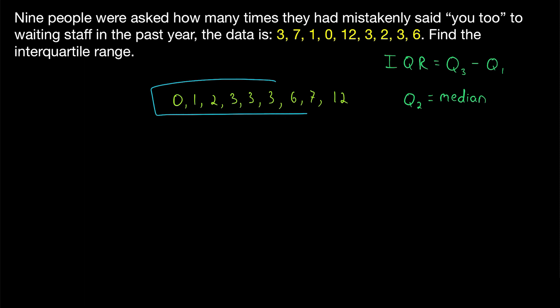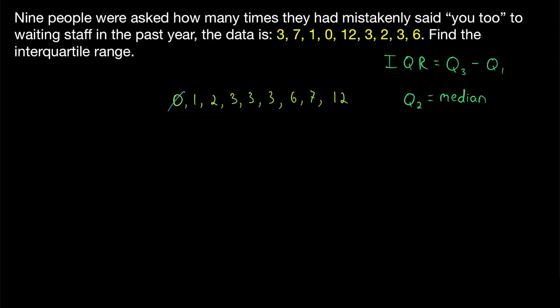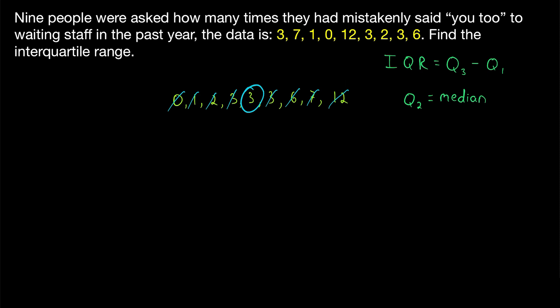For an odd number of data points, the median is just the number in the middle. That can be found by alternately crossing off numbers on either side of the list until we come to one number in the middle — and that is our median. We can verify this because there are just as many data points below it as above it: four below and four above.